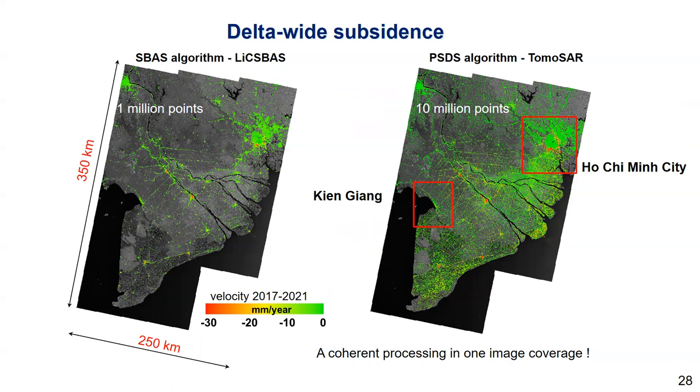Here we show that we can measure the average subsidence trends over the past five years for the entire Mekong Delta in the frame of about 10 million point measurements. Green is stable. Red indicates an unstable infrastructure area. We can map the subsidence for a very large area, like 250 km and 350 km. To validate, we first consider comparing to the results of a small region analysis.